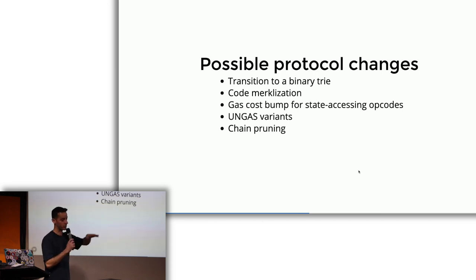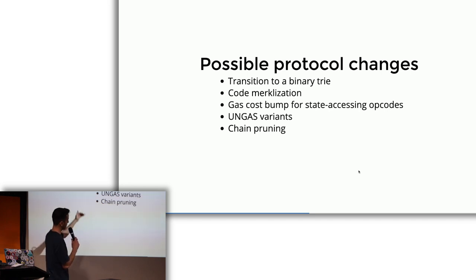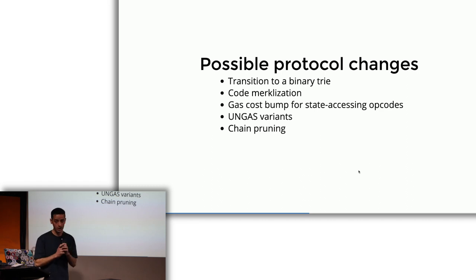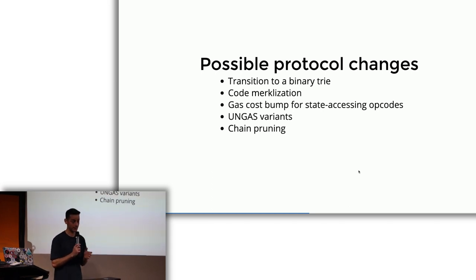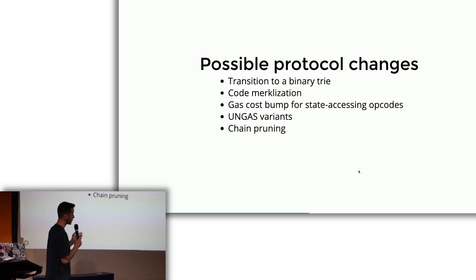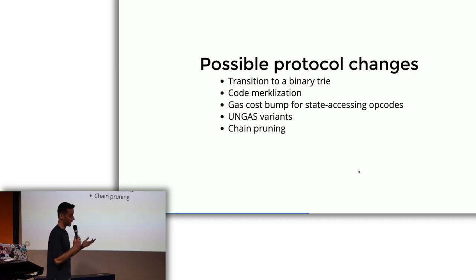Up to here were optimizations that you don't really care about as a contract developer. But the next things affect you directly. Because every time you do an SLOAD, a BALANCE, or any of the opcodes that touch a part of the state, miners would have to include a Merkle proof for that. This means that any state-accessing opcode now introduces a lot of additional overhead, and it means that the gas prices would have to be increased.